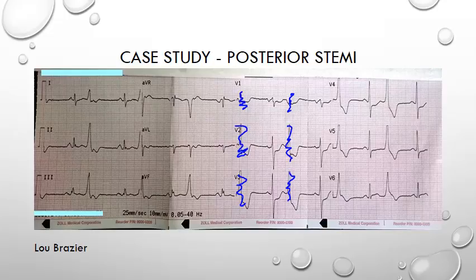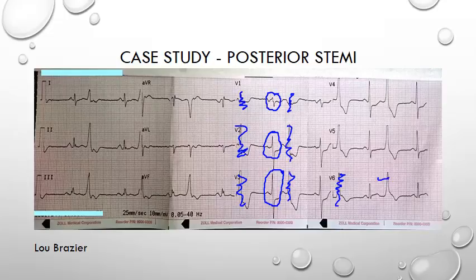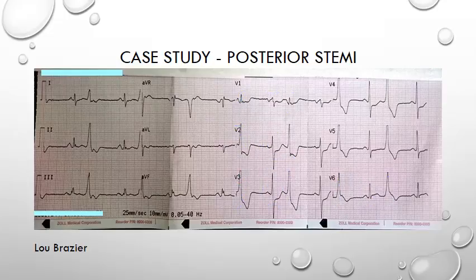In the normally conducted complexes there is ST depression with tall R waves: V1 has ST depression, V2 has ST depression with a tall R wave, and V3 has ST depression with a tall R wave. This ECG is highly suspicious of a posterior STEMI, and that suspicion is supported by V6 also being slightly elevated. Lou did perform a posterior ECG using three leads and reported a small amount of ST elevation in V7 to V9. Given the history together with this ECG, posterior STEMI is highly likely.